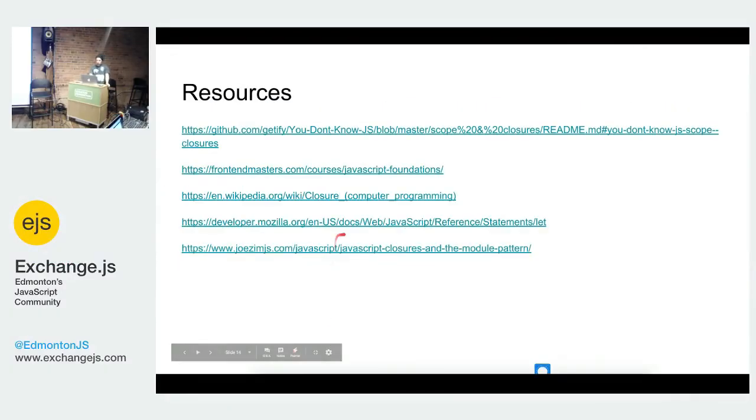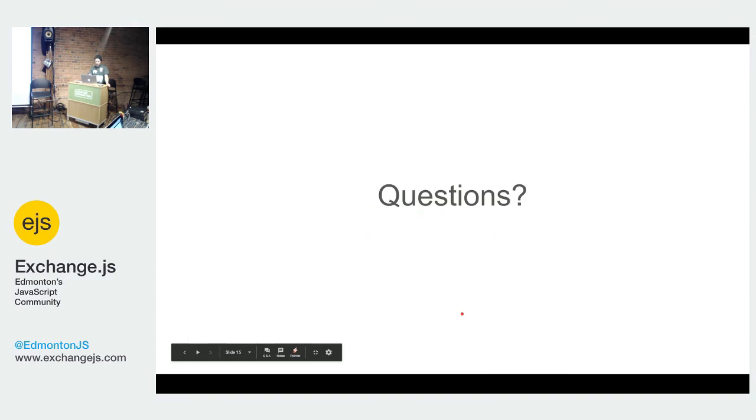So that's it for me. Some resources. Kyle Simpson wrote a book called You Don't Know JS. It's available for free online. It's really great. He also teaches a course on frontendmasters.com if you have access to that. It's called Deep JavaScript Foundations. He goes way more in depth into scope enclosures and a bunch of other things. Otherwise the MDN documentation is pretty good also. So any questions?